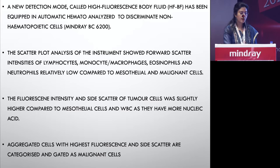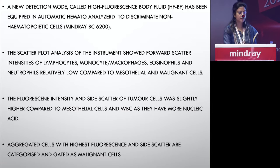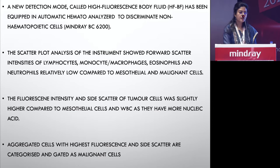The scatter plot analysis of the instrument has three types: forward scatter, side scatter, and light fluorescence. Forward scatter works on the size of the cells; side scatter works on the nuclear details; and the lateral fluorescence method helps distinguish between malignant and non-malignant cells. The fluorescent intensity in the side scatter is higher for tumor cells compared to mesothelial cells because tumor cells have more nucleic acid. Tumor cells also tend to aggregate more and have high fluorescence and side scatter.